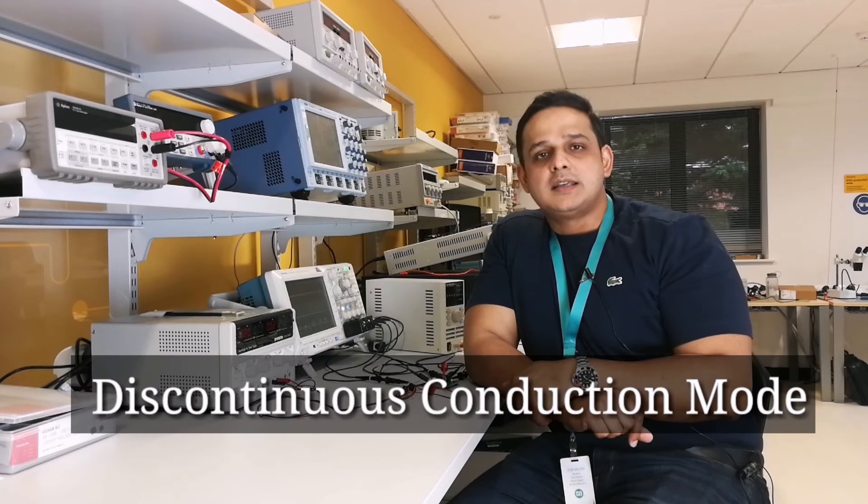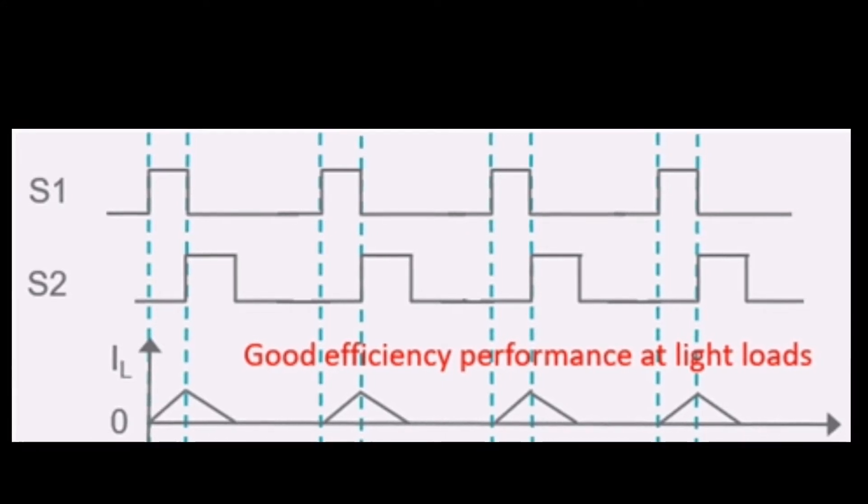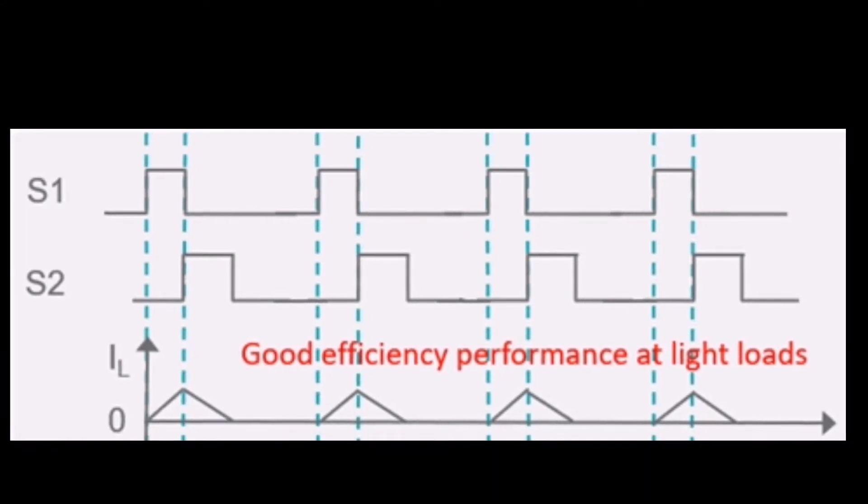The second mode is the DCM mode, which is the discontinuous conduction mode. In this mode, the converter does not allow the negative current, and the low side MOSFET is turned off as the inductor current is about to go to zero.